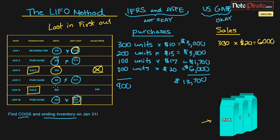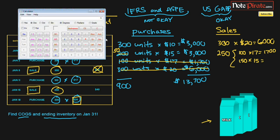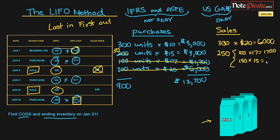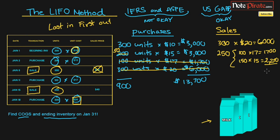Moving on to the second sale of 250 units: we've already eliminated that last level, so next we expense 100 units at $17, which is $1,700. But we still need another 150 units, so we expense 150 units at $15, which is $2,250. That brings our running total: $7,700 plus $2,250 equals $9,950 for cost of goods sold.